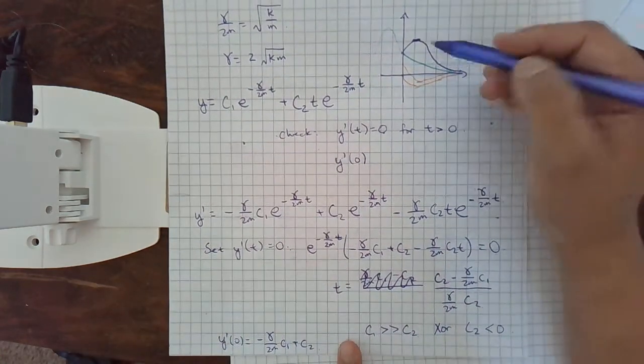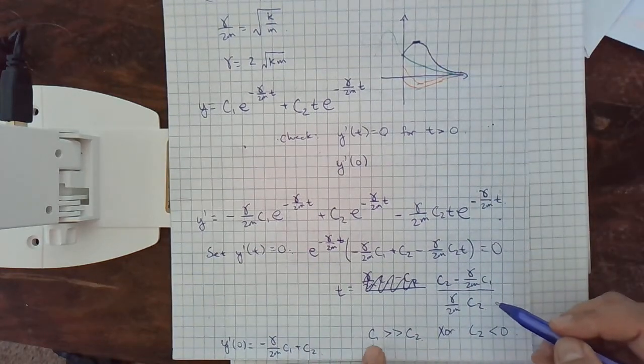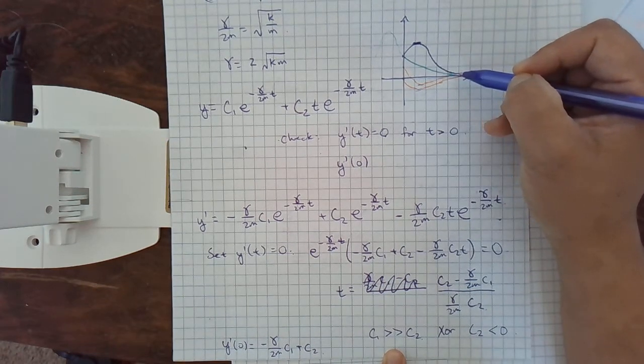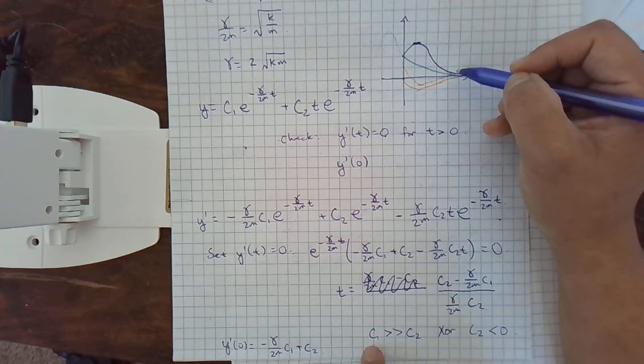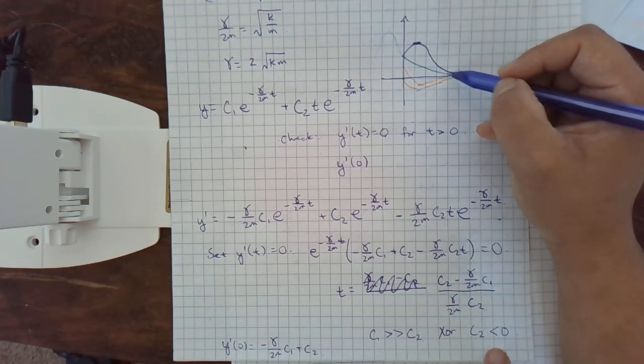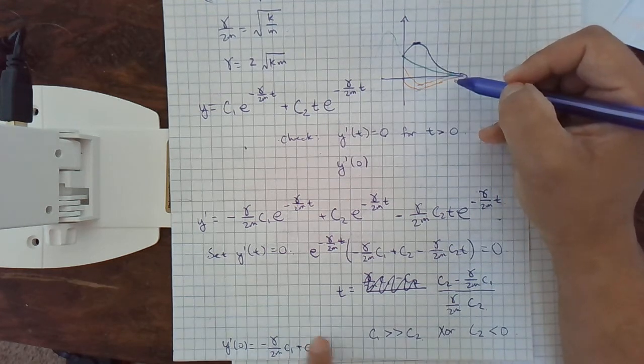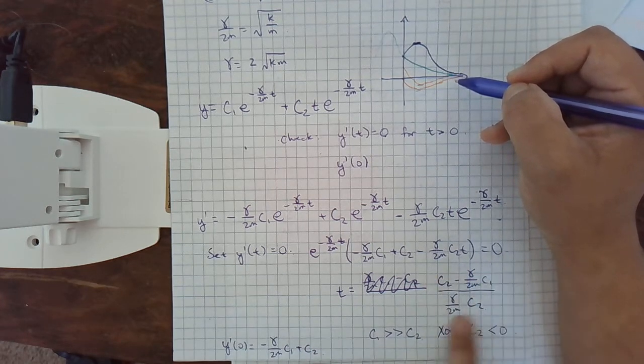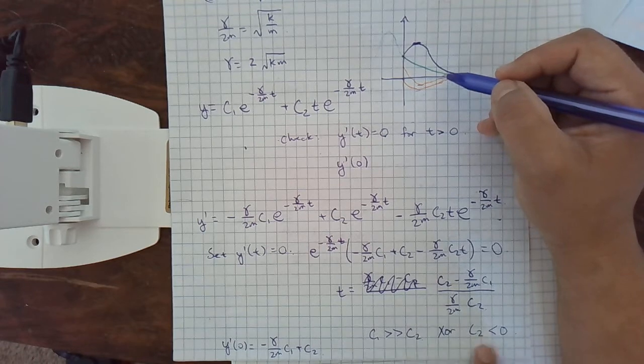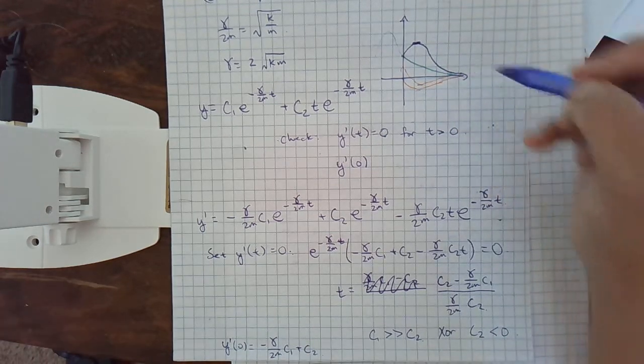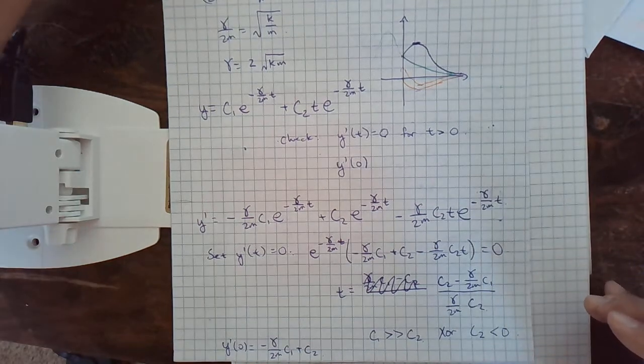We start out positive when c1 is not that much bigger than c2 and maybe c2 is positive. Once we get c1 a lot bigger than c2, but c2 is not negative yet, we go to the green one because now this is negative and then this is negative. And then once c2 is also negative, then we end up in the orange one. So, those are the three cases.